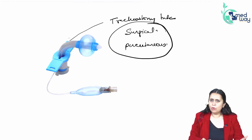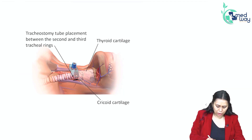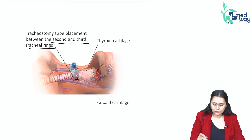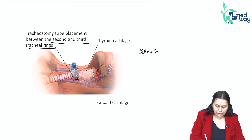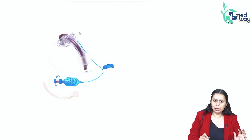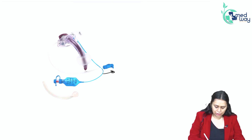Tracheostomy is more of an elective, planned procedure. The tracheostomy tube is inserted between the second and third tracheal ring. This is one type of tracheostomy tube — with a cuff.